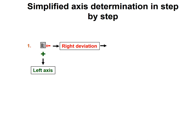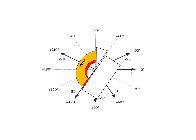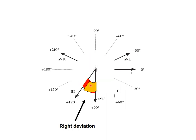So, lead number 1 negative means axis on the right side — right deviation. If we have lead 1 positivity, we are on the left side. Let's look at what happens when we are on the right side: we have to look at AVR. AVR is going to tell us whether we have positivity, meaning the axis is more than 120 — extreme right deviation — or AVR is negative and we have only a right deviation.